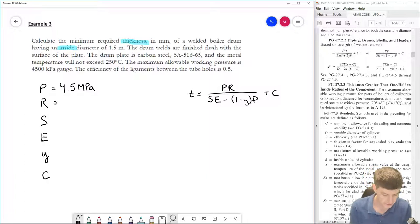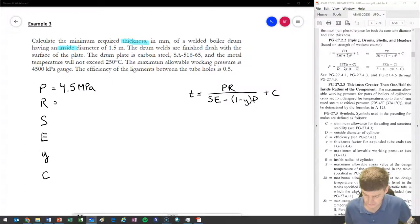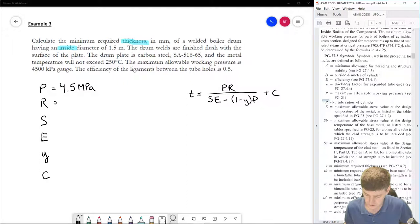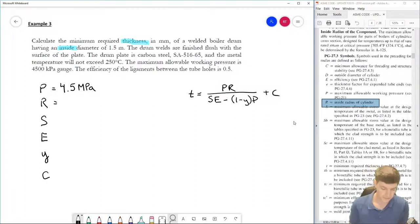My R value, and if I look back to my code, so my R is the inside radius of the cylinder, okay? So in order to get my inside radius, IR is going to be equal to the inside diameter divided by 2, and is going to be 1.5 meters. I don't like meters, I like millimeters, so 1,500 millimeters divided by 2, and R is going to be 750 millimeters.